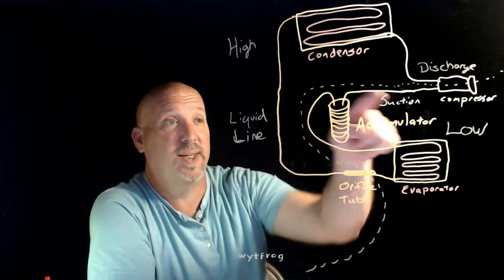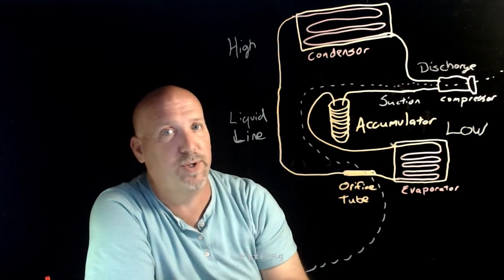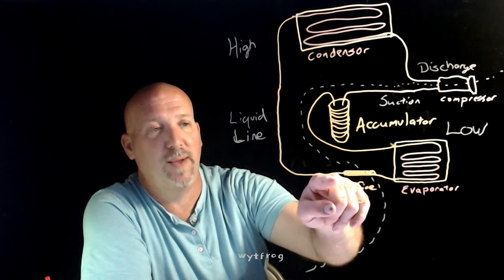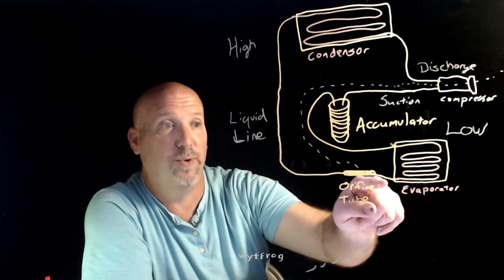And what will happen is because this is high pressure, whether it be vapor or liquid, it's going to be high temperature. Remember, pressures and temperatures are very related. As it goes through the orifice tube, it's going to go from a high pressure liquid to a low pressure liquid slash low pressure vapor.